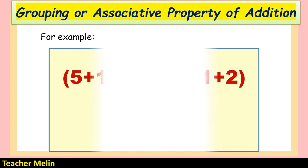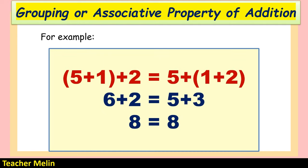Another example: 5 plus 1 plus 2 equals 5 plus 1 plus 2. Grouping 5 and 1: 5 plus 1 equals 6, then 6 plus 2 equals 8. Or grouping 1 and 2: 1 plus 2 equals 3, then 5 plus 3 equals 8. This is an example of the grouping or associative property of addition.